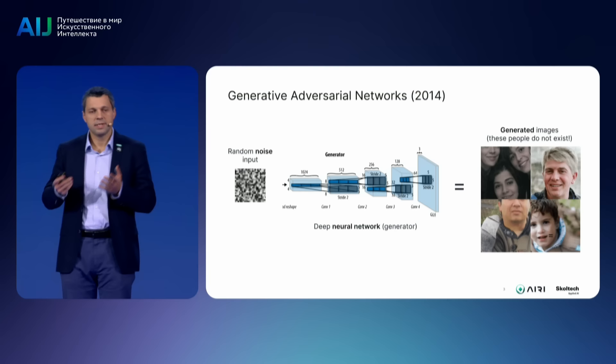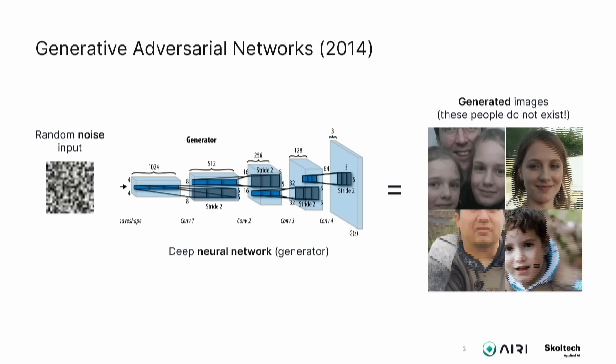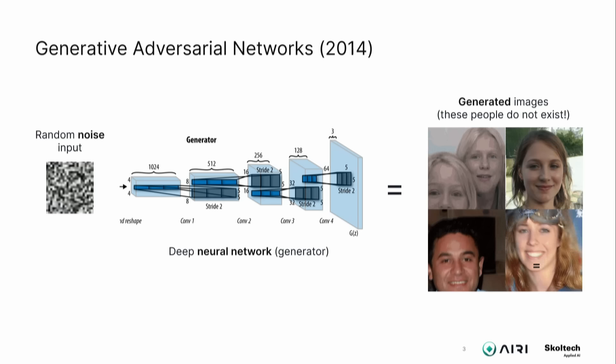One of the first models of this kind emerged in 2014 — the GAN model, a generative adversarial network. The structure is simple: a trained neural network receives white Gaussian noise as input and generates an object that was not present in the training data set. These models kicked off the modern development of generative adversarial networks.